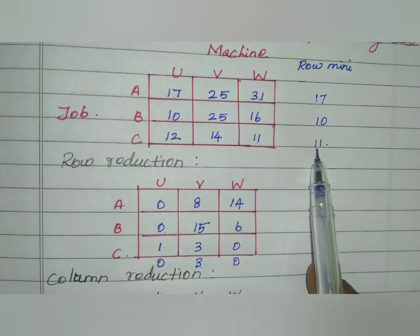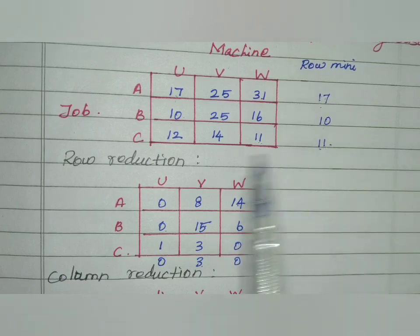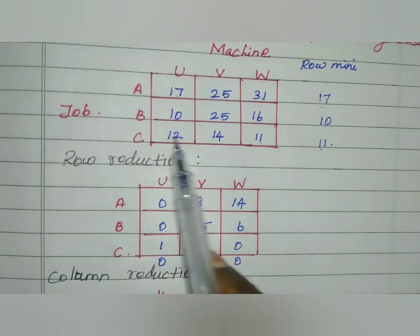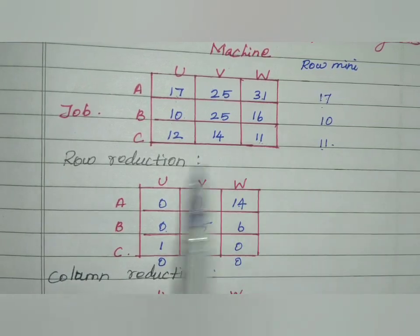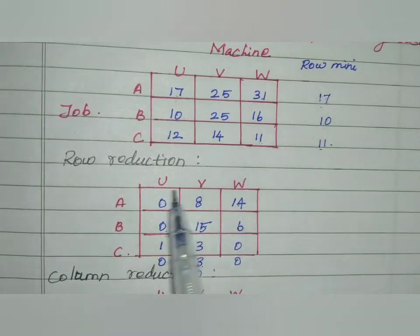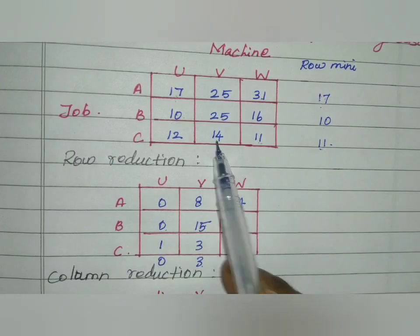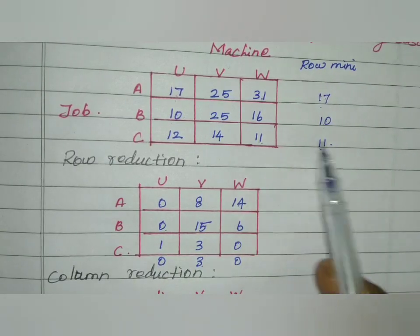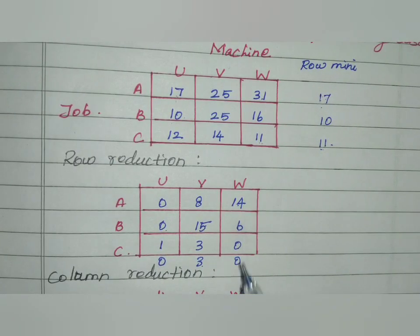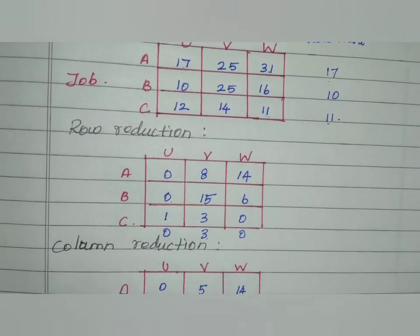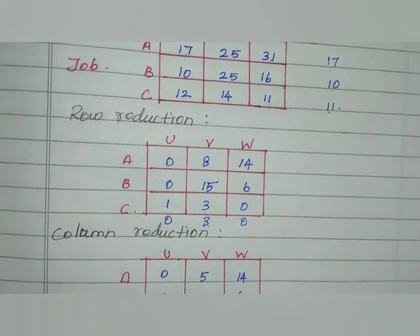Next, the minimum value for row 3 is 11, so we subtract 11 from this row: 12 minus 11 = 1, 14 minus 11 = 3, 11 minus 11 = 0. Row reduction is complete. Next step is column reduction.